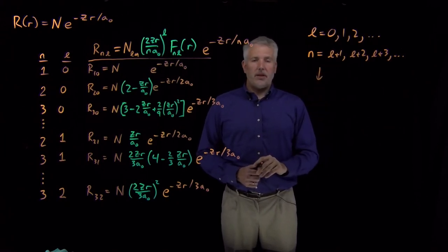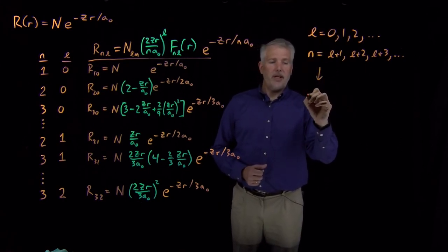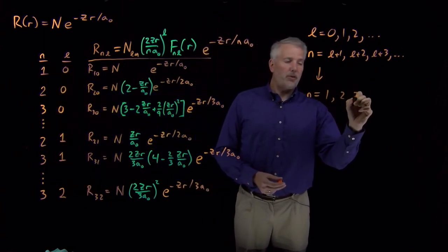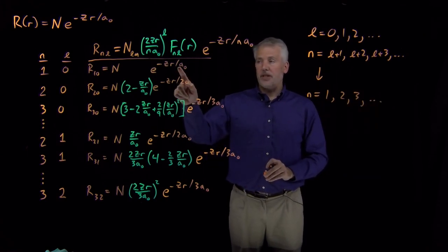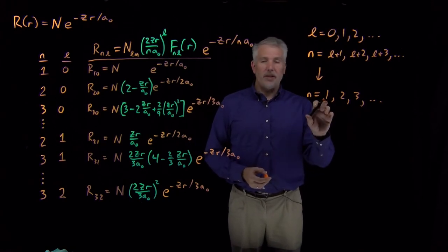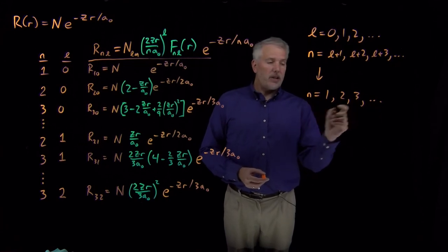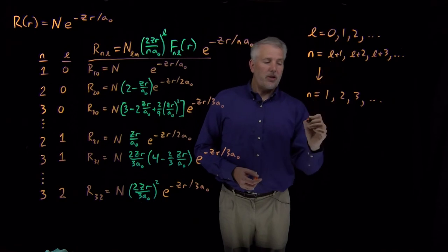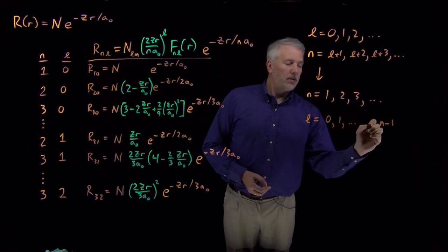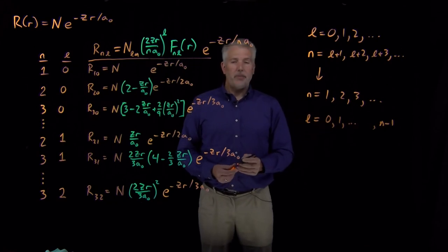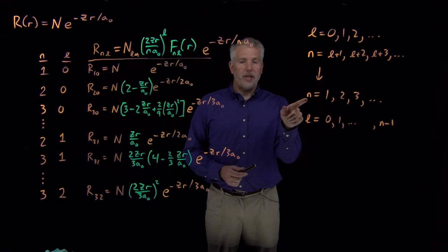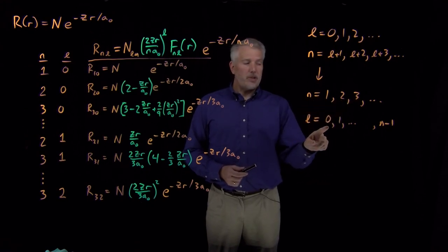Usually we state the rules in the following form: N can be any positive integer — 1, 2, 3, and so on. There is no N equals zero because e to the minus Zr over zero a₀ would be mathematically impossible, so one is the smallest allowed value of N. Given that N must be at least L plus one, rearranging tells us L can't be any larger than N minus one. So L ranges from 0, 1, 2, all the way up to N minus one. This version of the N and L rules should sound familiar from what you've learned about the hydrogen atom: one quantum number can be 1, 2, 3, and another ranges from 0 up to N minus one.